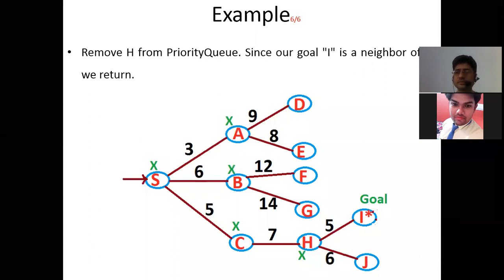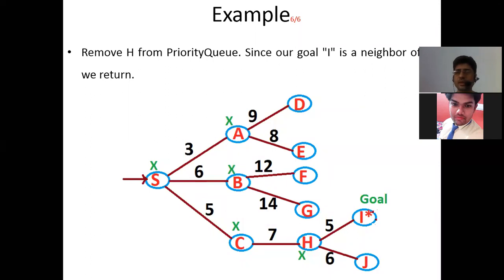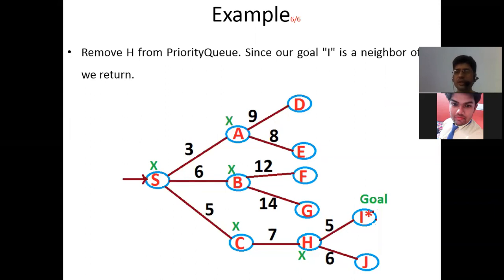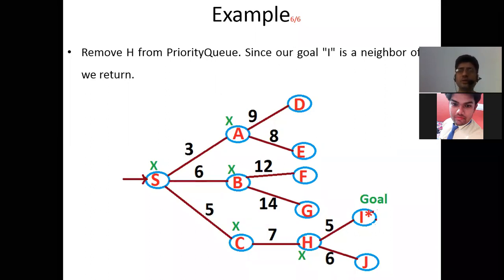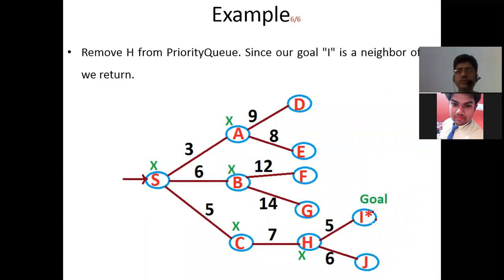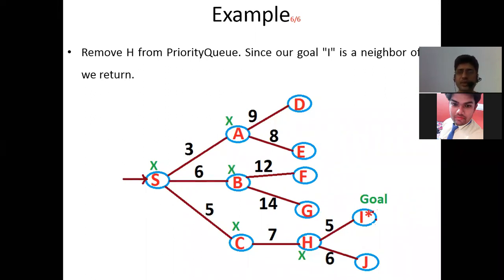A student asks: what if all edges have the same weight — will it behave like uninformed search? The instructor responds: if all costs are equal, there is no information to guide which direction to move. If you have no differential information, it is equivalent to having zero useful cost at every node, making it similar to uninformed search.